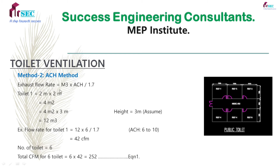For the second method — air changes per hour method — the toilet size is 2 meter by 2 meter, which is 4 square meters, and height is 3 meters, so volume is 4 into 3 equals 12 cubic meters. ACH is 6 to 10; I am considering 6. So 12 into 6 divided by 0.7 gives a total exhaust flow of 42 CFM per toilet. Number of toilets is 6, so total CFM is 6 into 42.